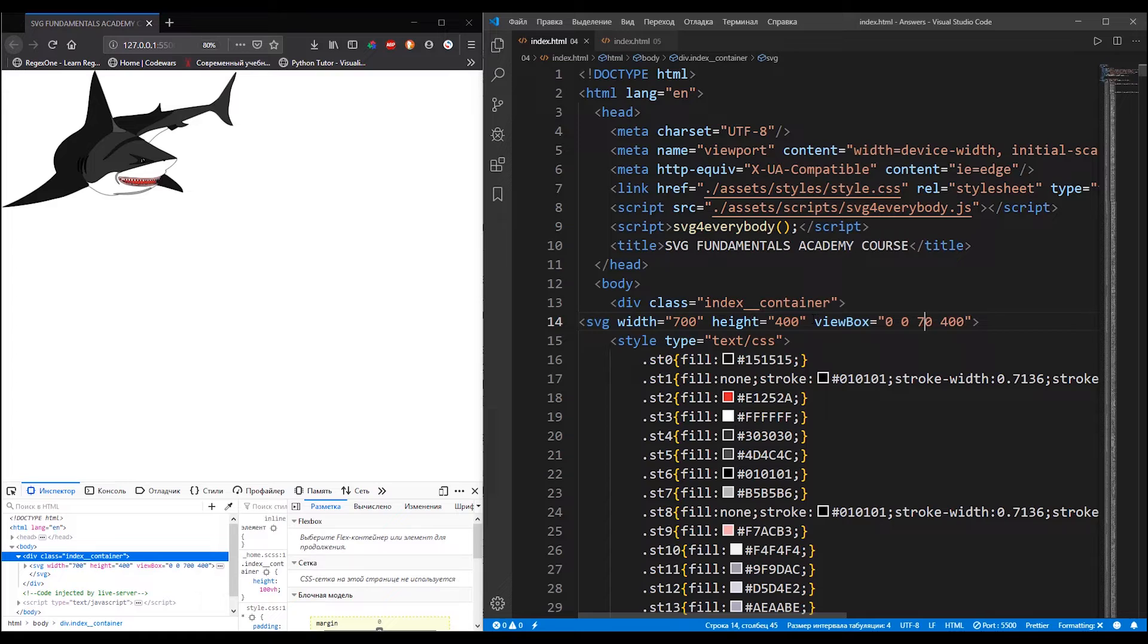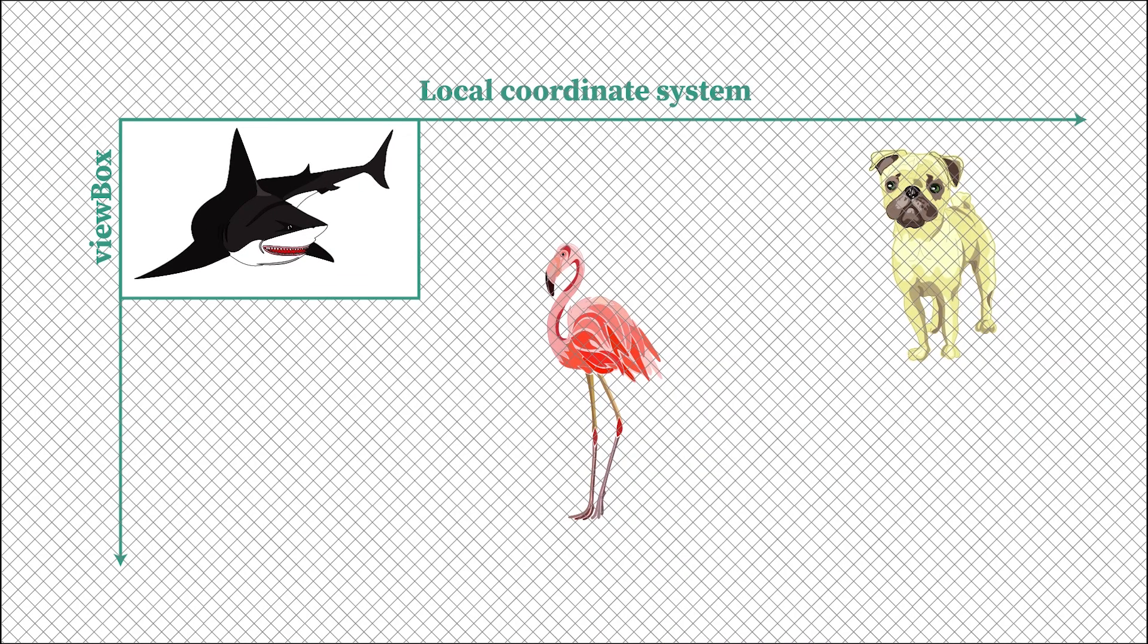I'm adding the viewbox attribute with a value of 0, 0, 0 and 0. The minx and miny parameters of the viewbox are the offset values. The minx parameter is offset from the left of the beginning of the local coordinate system and the miny parameter is the offset from the top of the beginning of the local coordinate system. The two last parameters are the width and the height of the viewbox.